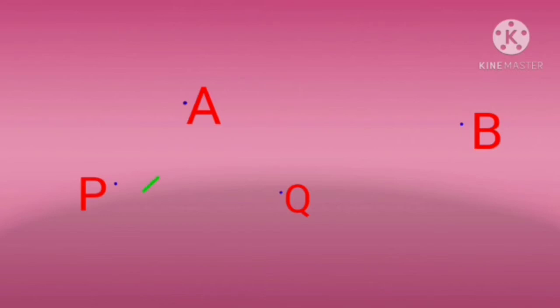So we read them as point A, point B, point P, point Q — this is the way to read a point. Is it clear, children?